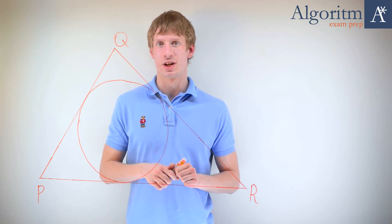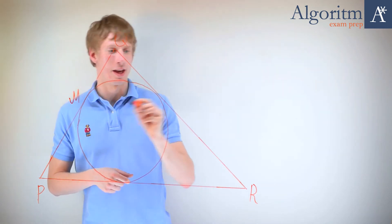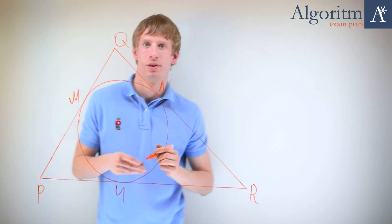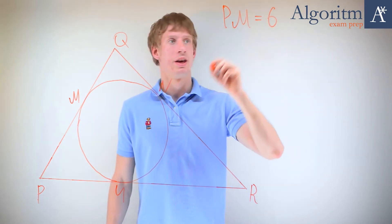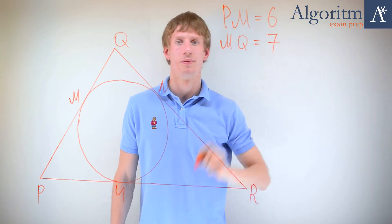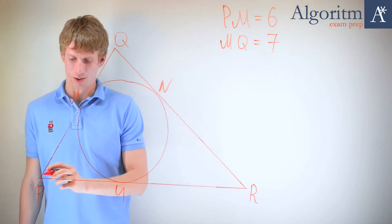The tangents touch the circle at points M, N, and U. PM equals 6, MQ equals 7, and we need to find the length of PU.